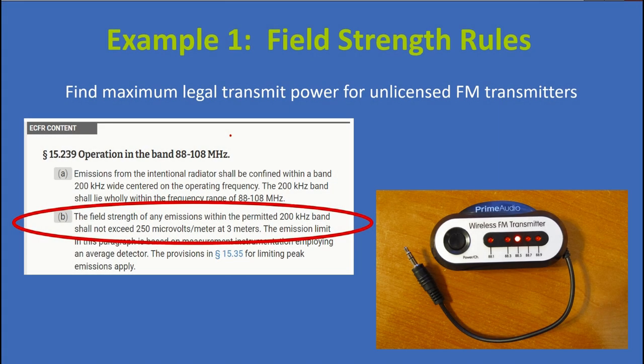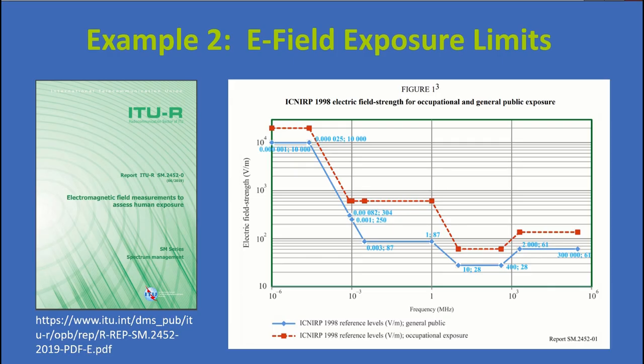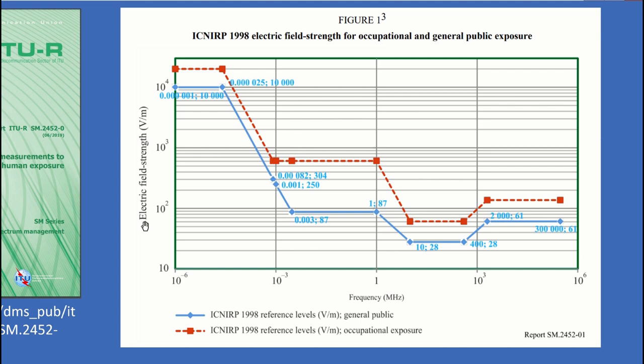Here's an example of why it's important to know things like that. If you want to build and market a transmitter, for example, you will have to follow the rules. And sometimes those rules will not tell you directly what you want to know. For example, what is the maximum power? Instead, the rules may say things like the field strength of any emissions shall not exceed 250 microvolts per meter at 3 meter distance. Or you may be interested if it's safe to be close to a particular radio transmitter. And here's an example of a manual I found on the web titled Electromagnetic Field Measurements to Assess Human Exposure. And those are given in electric field strength units of volts per meter.